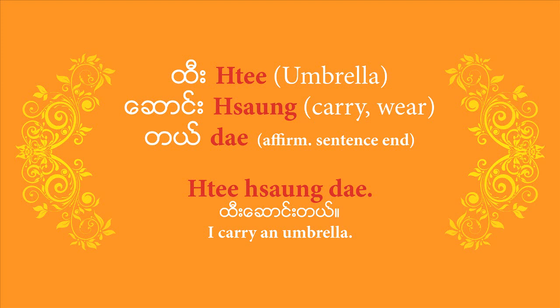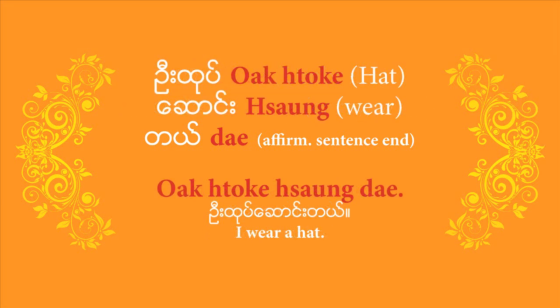'Sounde' is the verb that means to use something to shield or to cover yourself. It's the same verb you would use to say, for example, wearing a cap on your head. The word for hat is 'oto'. So if you want to say 'I'm wearing a hat', it's 'oto sounde'. 'Oto' is the word for hat or cap, 'sounde' is the verb to carry something over your head or wear it as protection, and 'de' is the affirmative sentence-end. Put it all together: 'oto sounde' — I wear a hat.